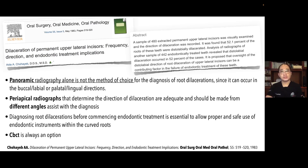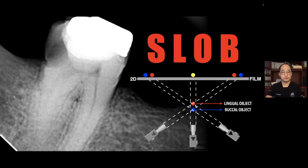In this recent era, CBCT or three-dimensional radiography is always an option and will be the best choice for identifying root canal dilacerations. In this case, I'm using my SLOB technique and one angle can clearly capture dilacerations in the apical third of the root of this mandibular molar.